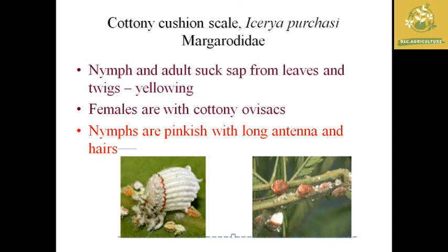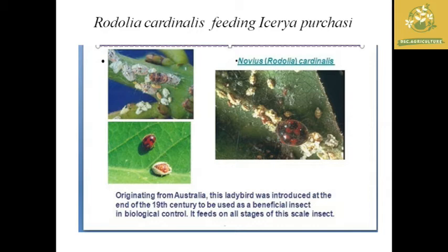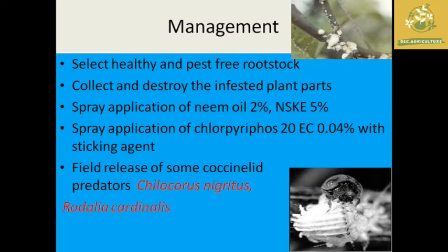These are the symptoms caused by cottony cushion scale. The predator Rodalia cardinalis feeds on these cottony cushion scales and is an important biological control agent. It originates from Australia and was introduced in the 19th century as a beneficial insect to control these scale insects at all life stages, making it a very effective predator.